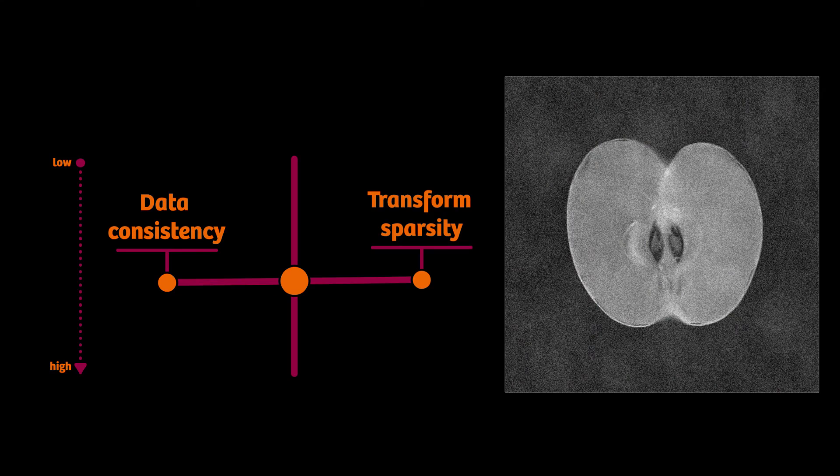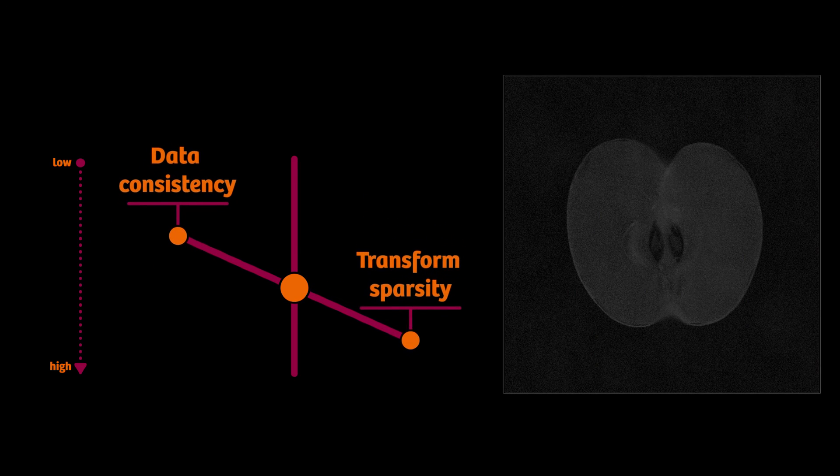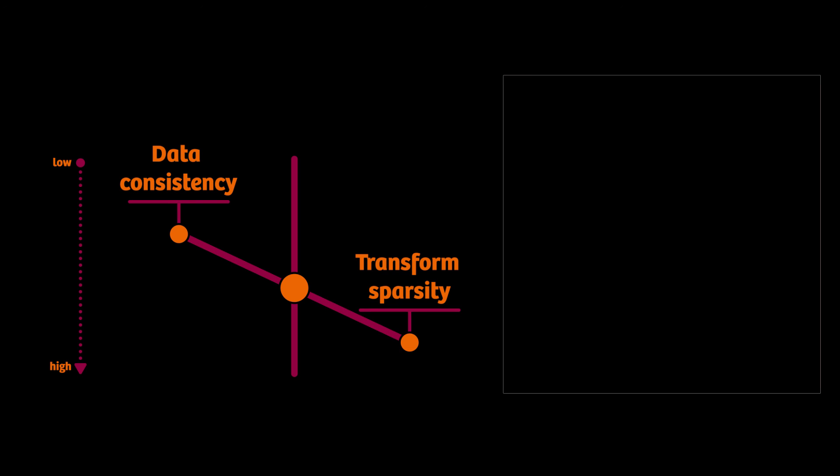Let's look what this would mean for our known example. If we overweight transform sparsity, we would get a completely black image, as we would have removed all the image information. And as you can see, there's nothing to see.